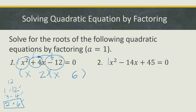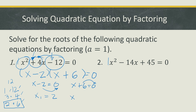Since the middle term is positive, we write the positive sign on the larger factor, 6, and the other becomes negative. So the two factors of the trinomial are (x - 2) and (x + 6). Equating both to zero: x - 2 = 0 gives x₁ = positive 2 by transposition, and x + 6 = 0 gives x₂ = negative 6. These are the two solutions.